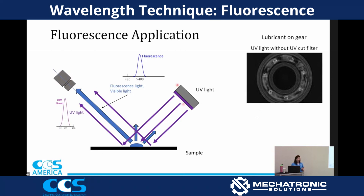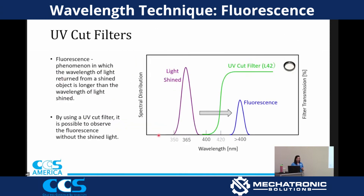Here's what we have: the UV light shining down and then the higher wavelength reflecting into our camera. If we use a UV cut filter, we can cut out that shined light and we only want to see the fluorescent material.